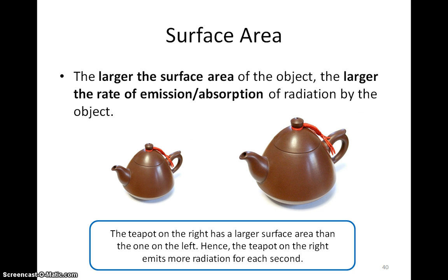Surface area. The larger the surface area of the object, the larger the rate of emission of radiation by the object. For example, the teapot on the right has a larger surface area than the one on the left. Hence, the teapot on the right emits more radiation each second.